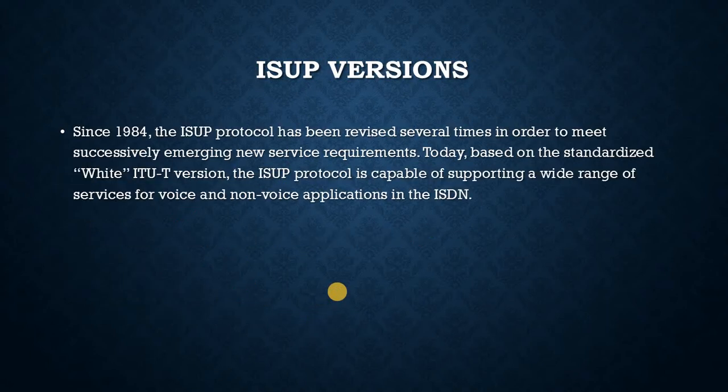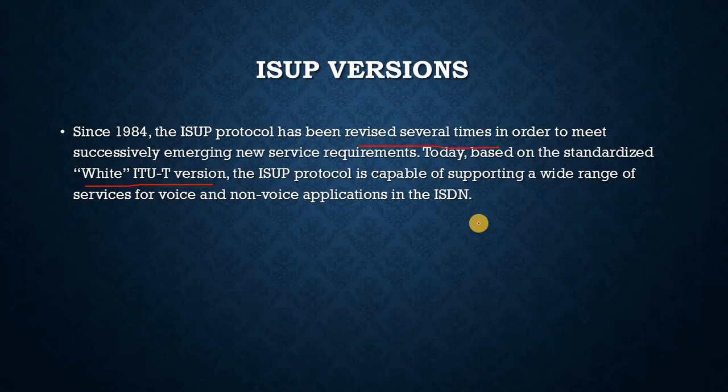ISUP versions. Since 1984, the ISUP protocol has been revised several times in order to meet successively emerging new service requirements. Today, based on the standardized ITU-T version, the ISUP protocol is capable of supporting a wide range of services for voice and non-voice applications in the ISDN. The ISUP protocol covers all TUP functions in dedicated telephone networks and can also be used in circuit-switched data networks. In the future, ISUP is expected to be found in almost all exchanges that use SS7 signaling, because ISUP will replace the TUP protocol in the long run.